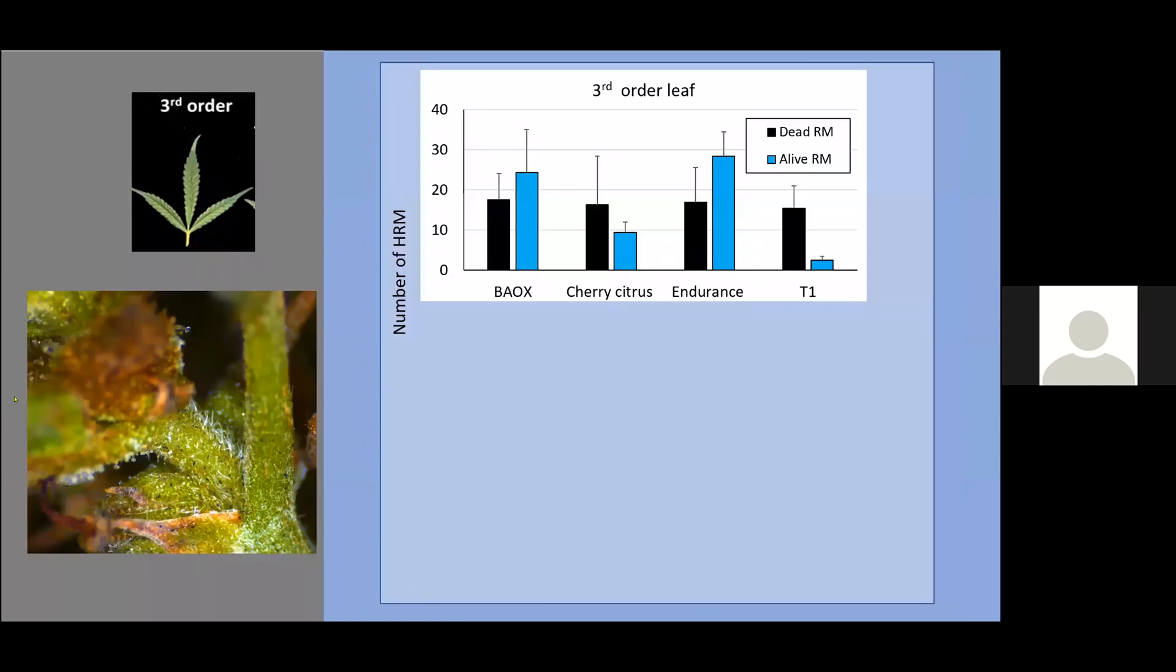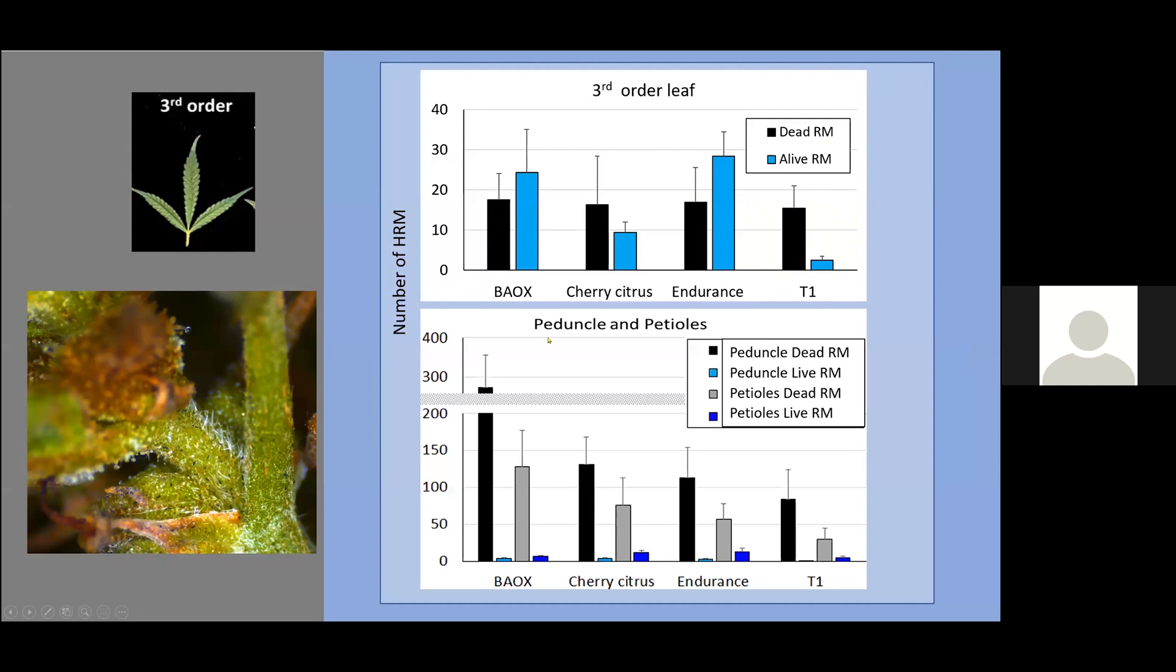Once we were in Princeton, these are the tallies for the third order leaves, and these were the leaves that had higher numbers compared to the well-developed leaves. In most cases, all these leaves have dead russet mites or russet mites that were alive. The ones that have the lower numbers were the T1 cultivar. We also observed the peduncles and the petioles. The peduncles is the stem that supports the inflorescence, and the petioles are the stem that supports the leaf. They have higher numbers than even the leaves.